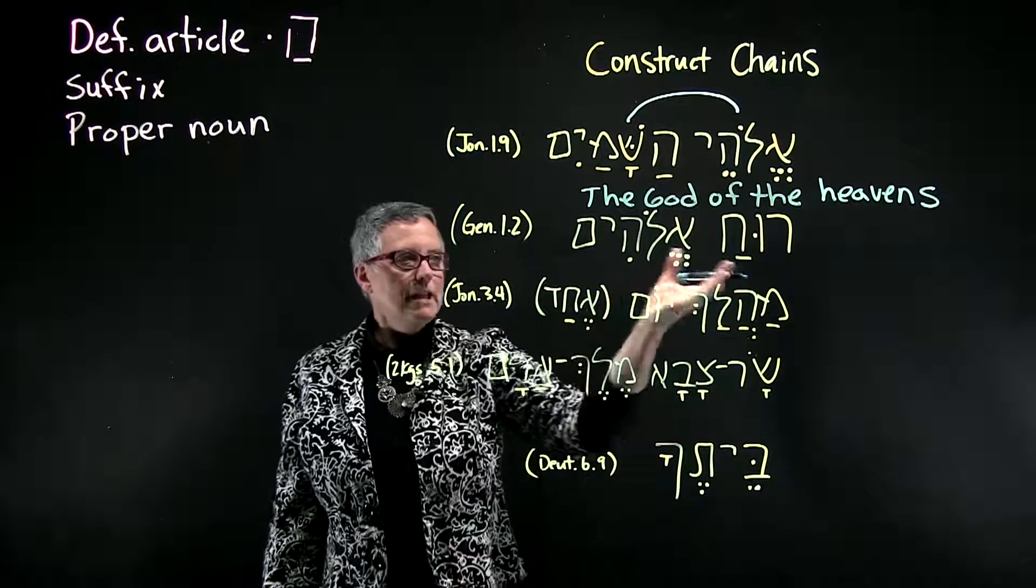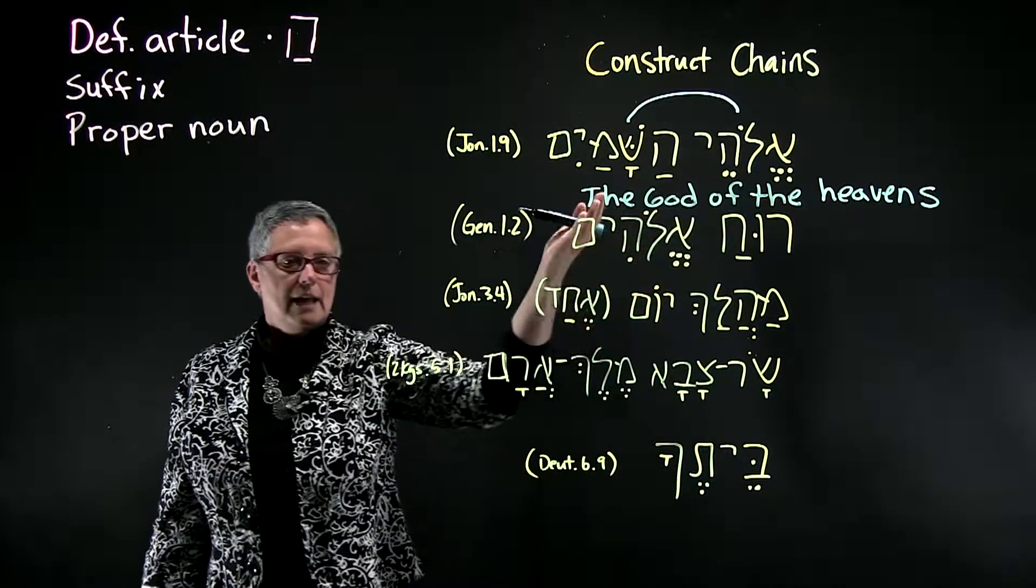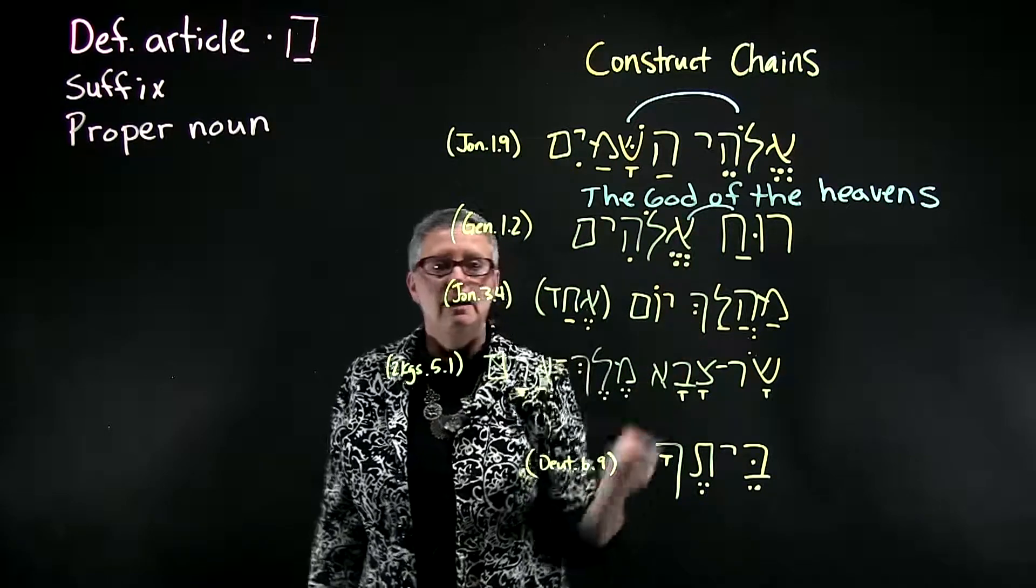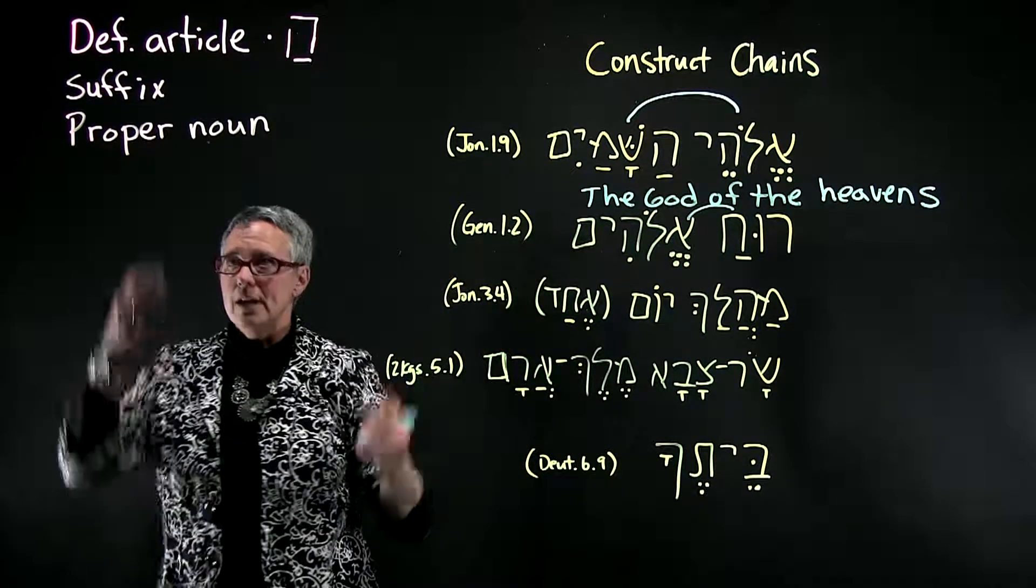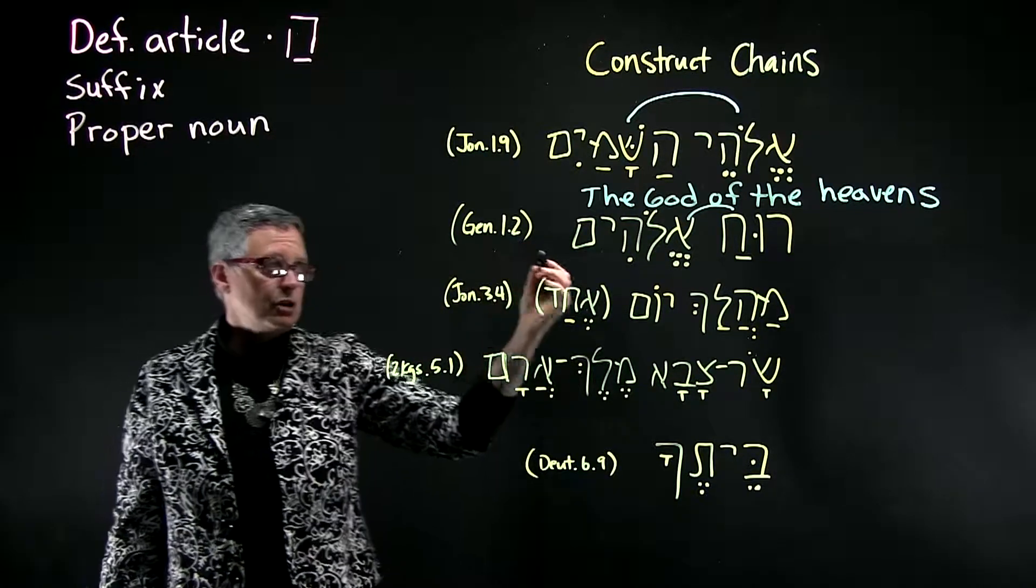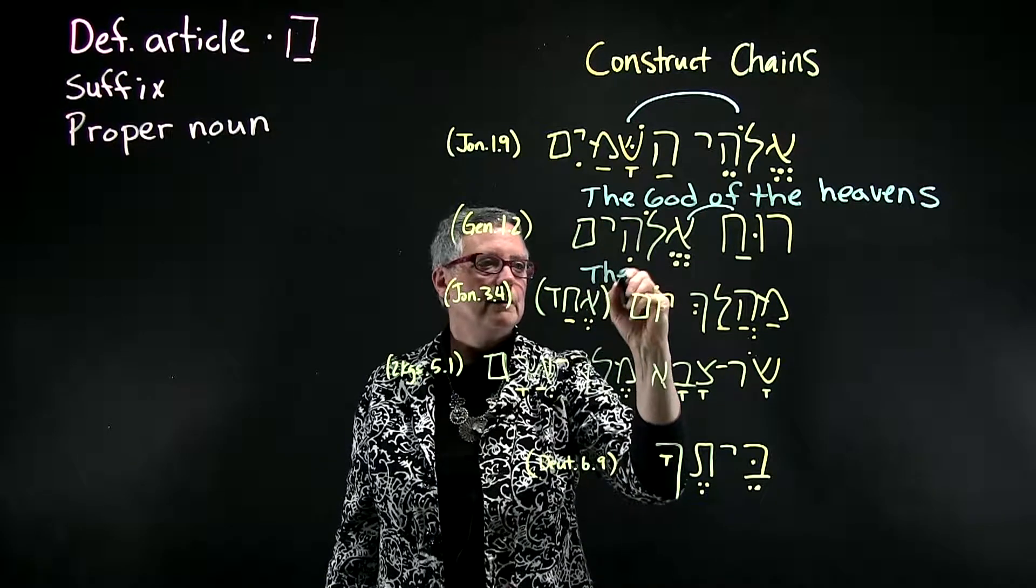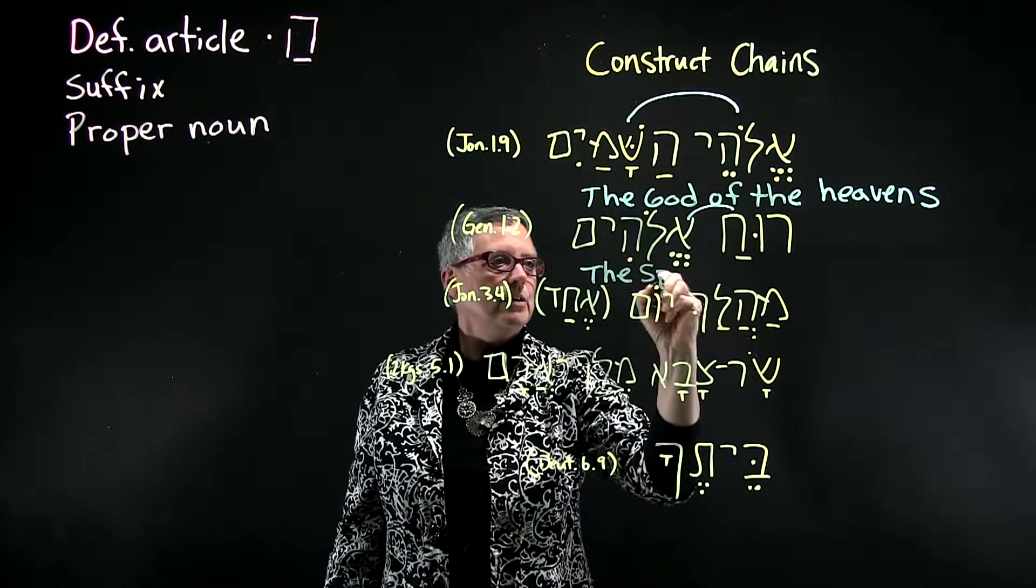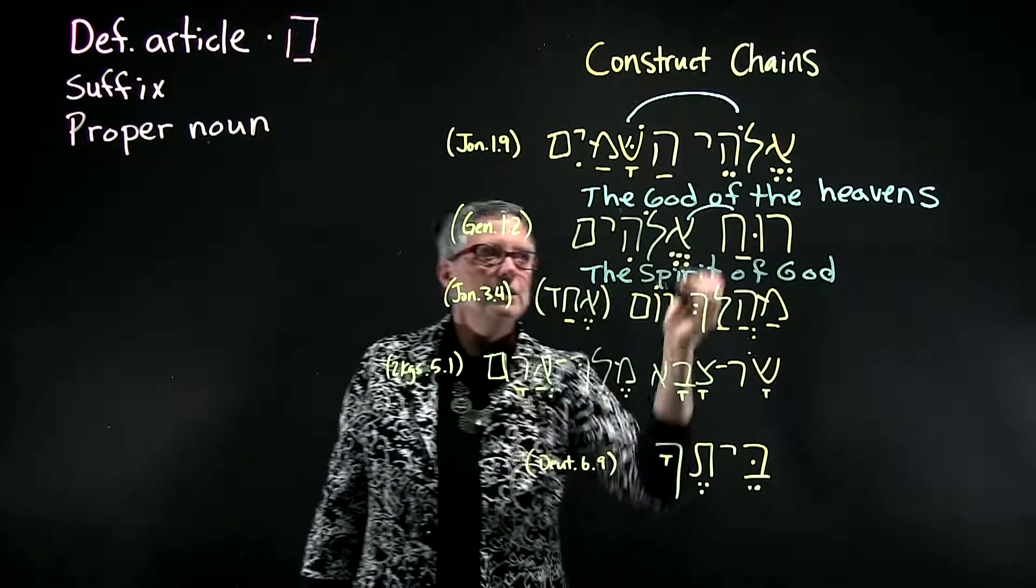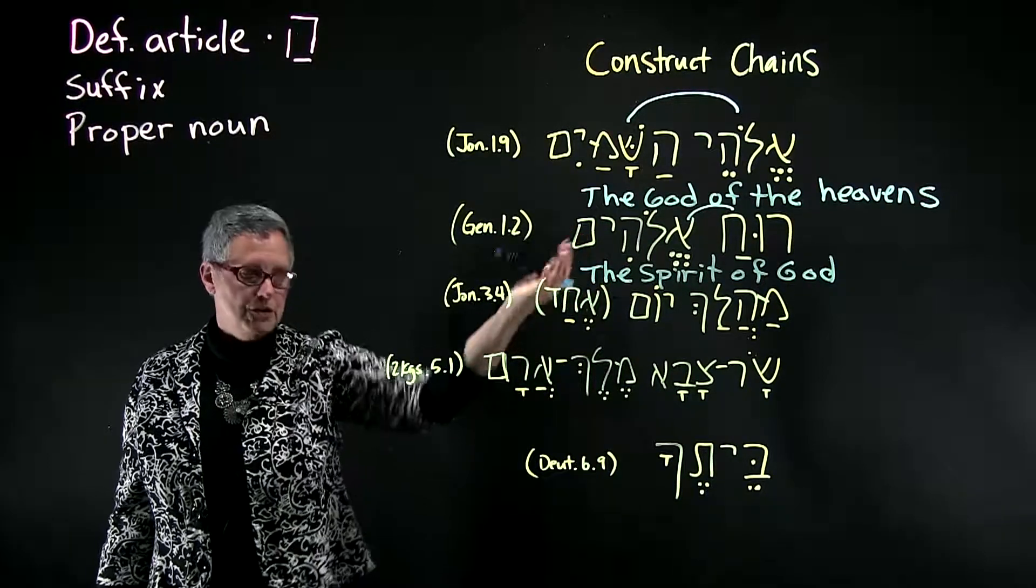The second one, Ruach Elohim. Spirit and God together. It becomes a construct chain. And because Elohim is a proper noun, it's a definite construct chain. So the translation would be the Spirit of God. So notice how we're adding the 'of' so that we get the possessive feel to the sentence.